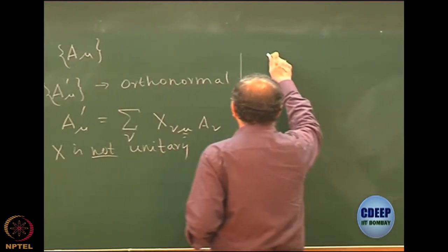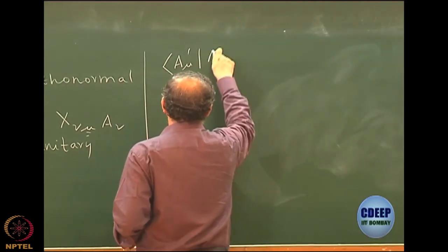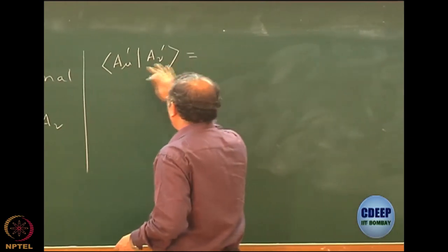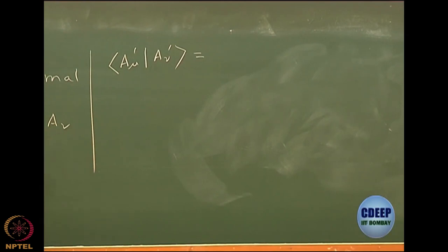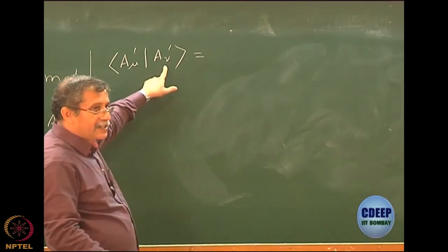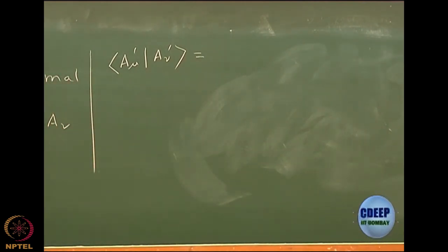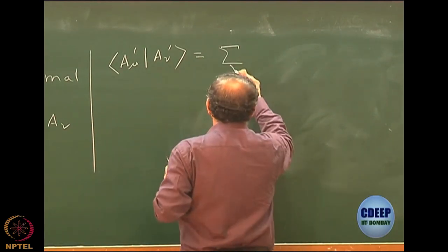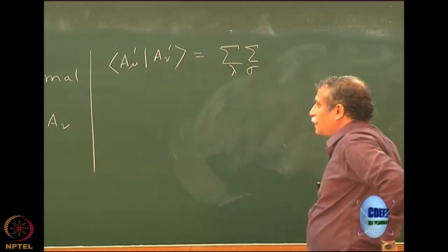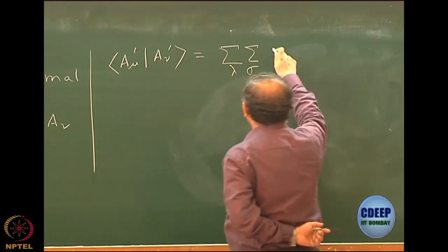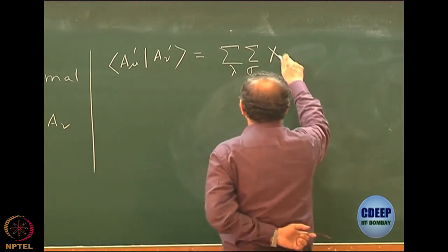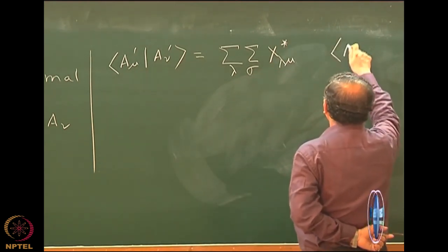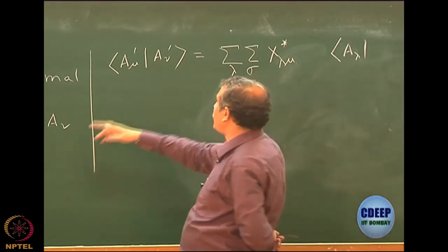We need to know what the character of X should be. To analyze that, let us look at the overlap of two prime basis vectors A_μ prime and A_ν prime. This should become δ_μν if we want orthonormality. I will expand both the left and right-hand side using the transformation. Since μ and ν are fixed indices, I must use different dummy indices — say lambda and sigma — when expanding.